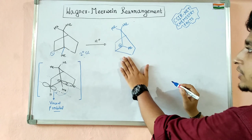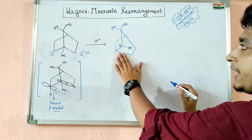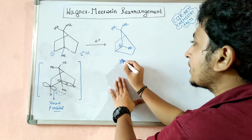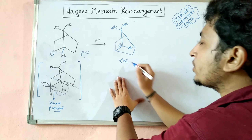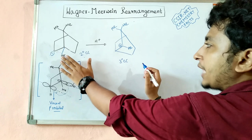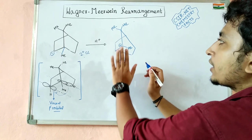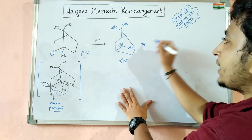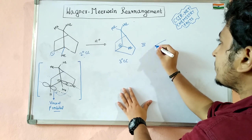In the new structure, you can see this is a tertiary carbocation, so it is more stable than the previous secondary carbocation. This can be redrawn for clarity.